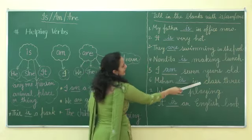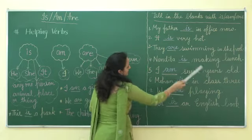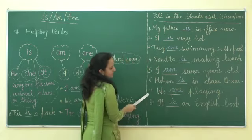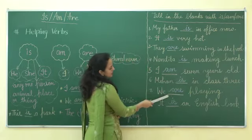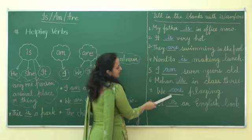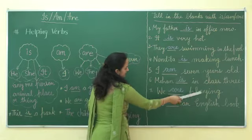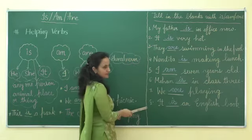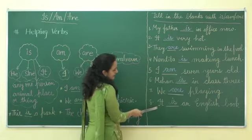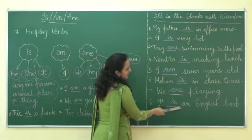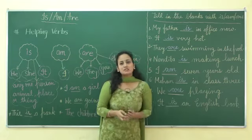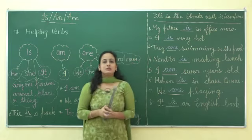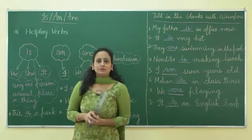Number five: I am seven years old. Number six: Mohan is in class three. Number seven: We are playing. Number eight: It is an English book. I hope this is clear to you. Thank you.